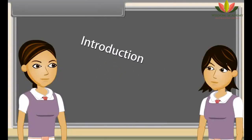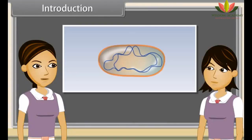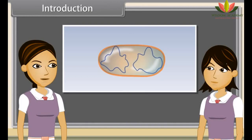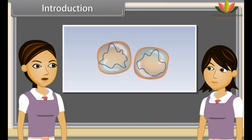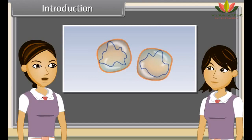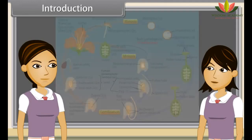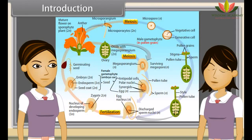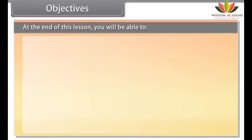Reproduction is the ability of all organisms to produce young ones similar to themselves in most characters. The process which involves fusion of male and female gametes to form a new individual is known as sexual reproduction.